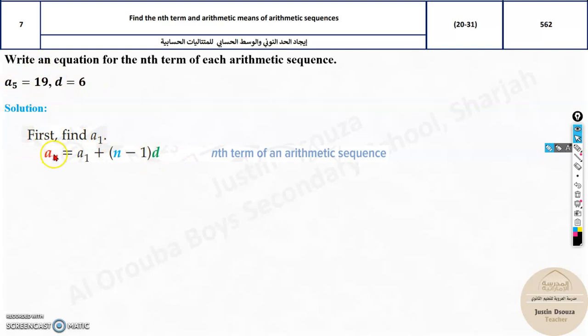You know a_n or a_5. Over here, you can put it as a_5 is 19. First term is unknown. n is 5 and d is 6. So, all you're doing is substitute them. 19 equals a_1 is the first term plus n is 5. Because over here, it's mentioned. And minus 1, d is 6.